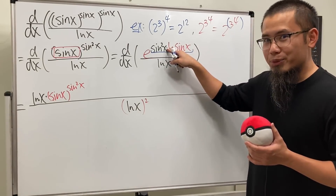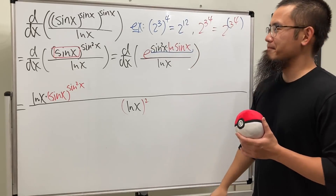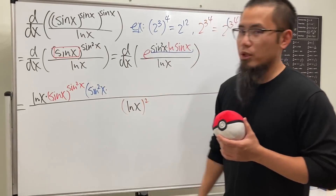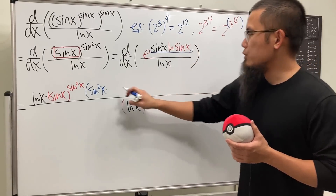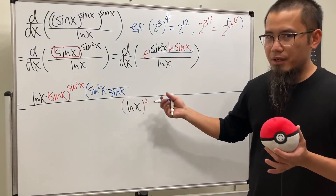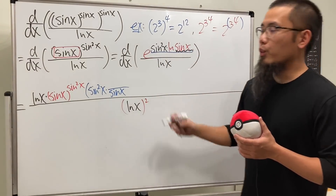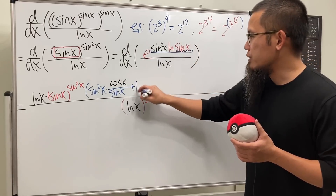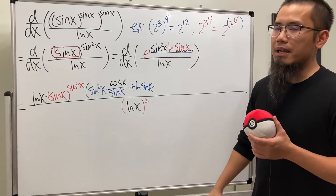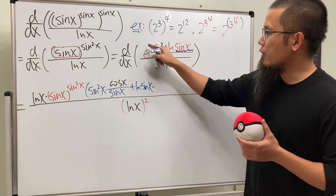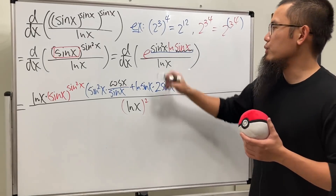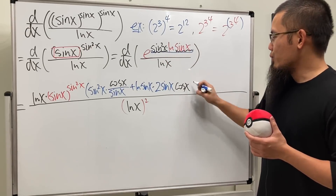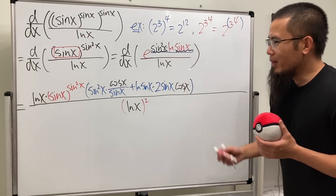To differentiate the exponent sin²(x)·ln(sin(x)), we use the product rule with more chain rule. Keep the first function sin²(x), multiply by the derivative of ln(sin(x)) which is 1/sin(x), times cos(x) by chain rule. Then add ln(sin(x)) times the derivative of sin²(x), which gives 2sin(x)·cos(x).